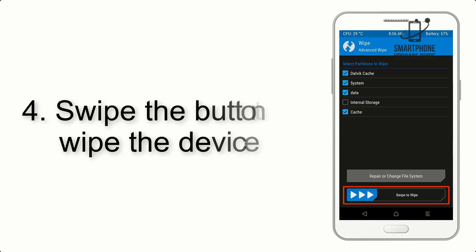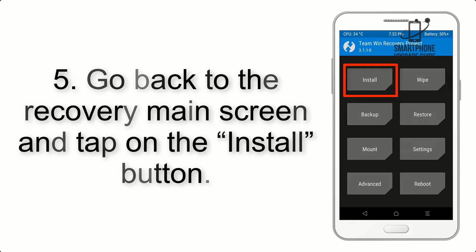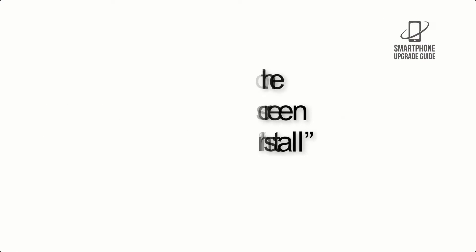Step 4. Swipe the button to wipe the device. Step 5. Go back to the Recovery main screen and tap on the Install button.